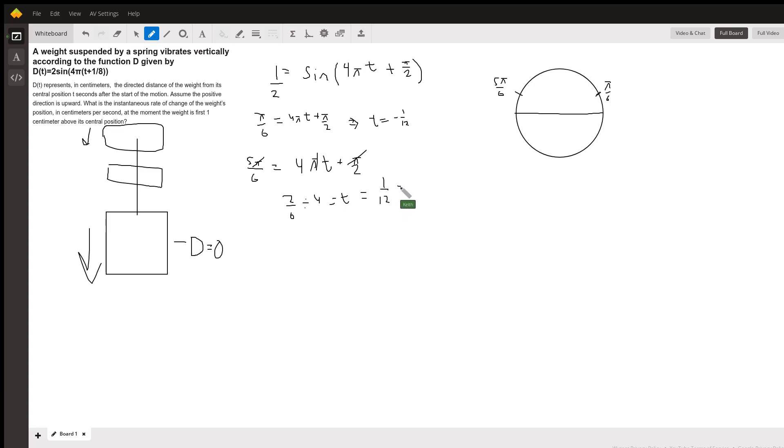So this is the time at which the weight is first one centimeter above its central position. And so now we need to use this t value in the derivative. So let's take the derivative of this function. So d'(t) is equal to—the whole constant out front is still two—derivative of sine is cosine, so 2 times cosine of 4π. I'm just going to distribute out 4πt plus π/2.